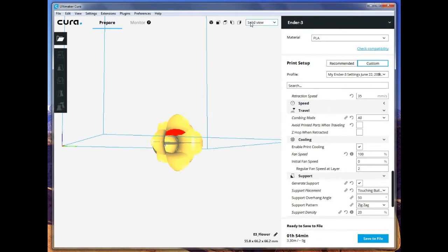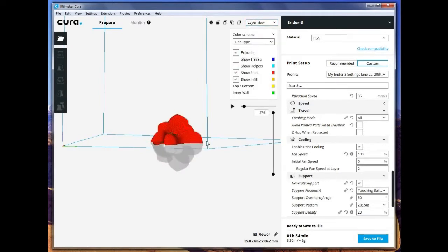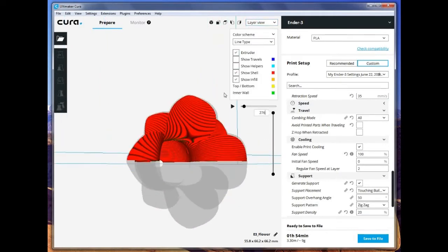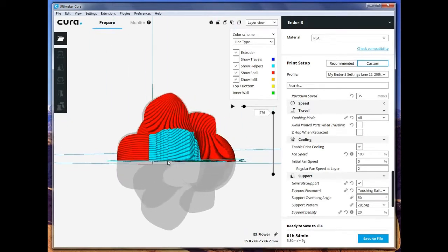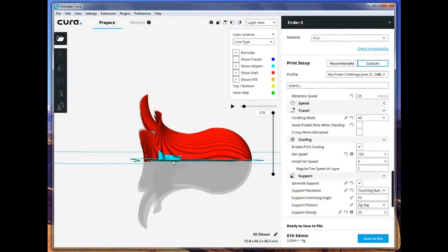We go to layered view. We click on the helper, or what is the support material. It shows up as supporting the inside of the flower. And we rotate one side, and we can see we've got a little bit of support on another petal.